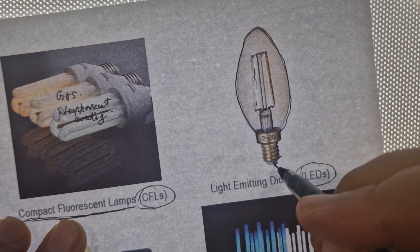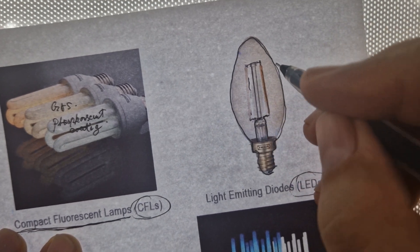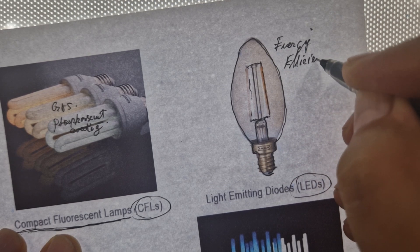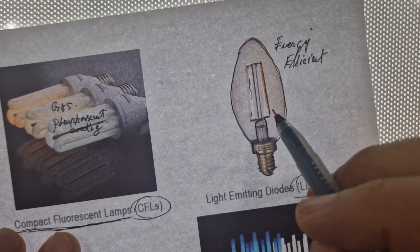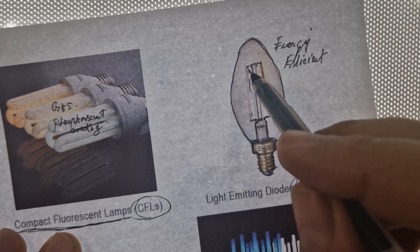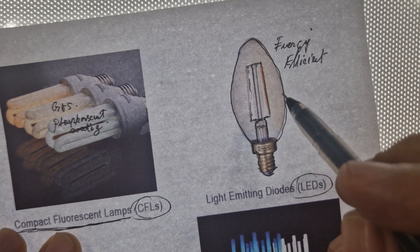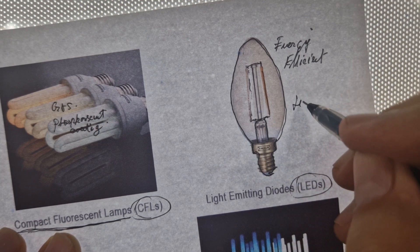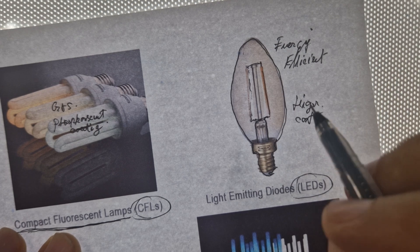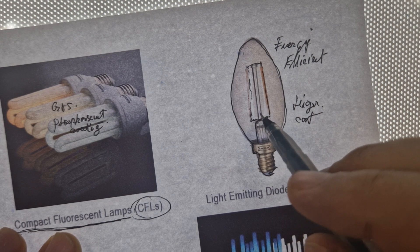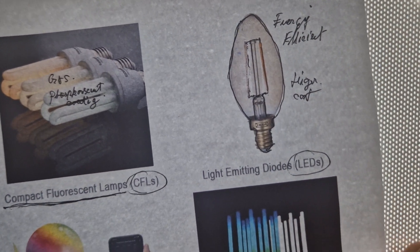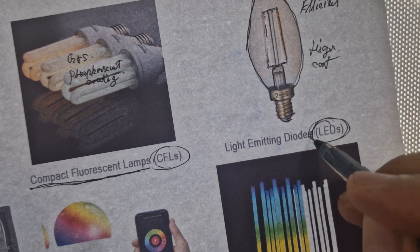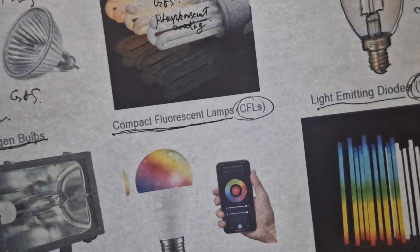In terms of pros, they are very energy efficient, have a long life span, are available in different types of colors and temperatures, and produce only little heat. In terms of cons, it's higher cost compared to others, and the light quality can vary. This was the LED, light emitting diodes.